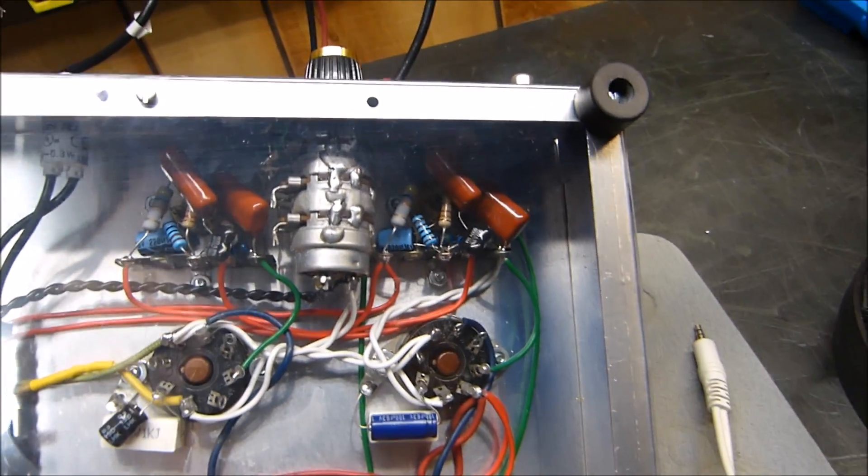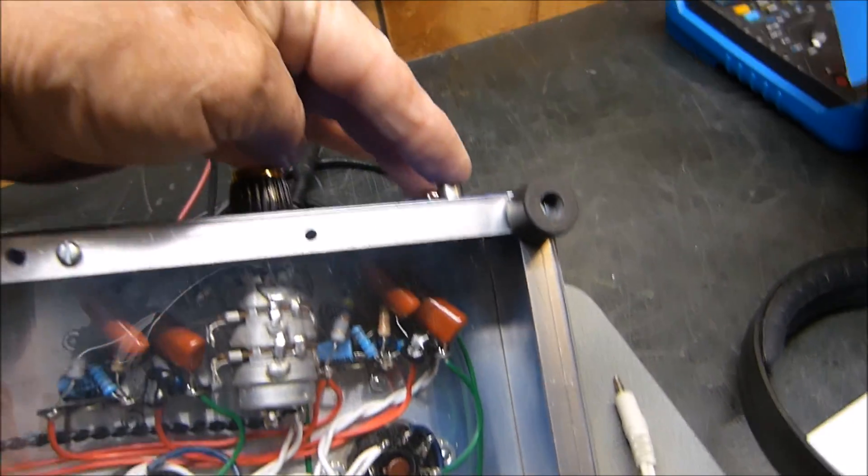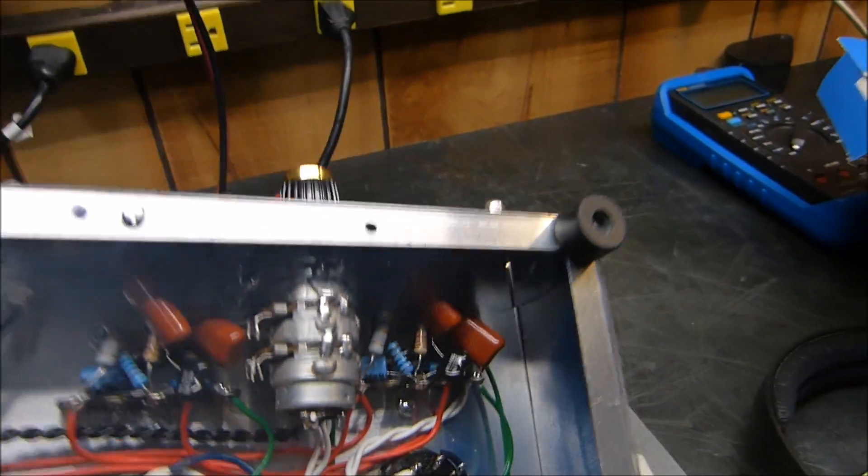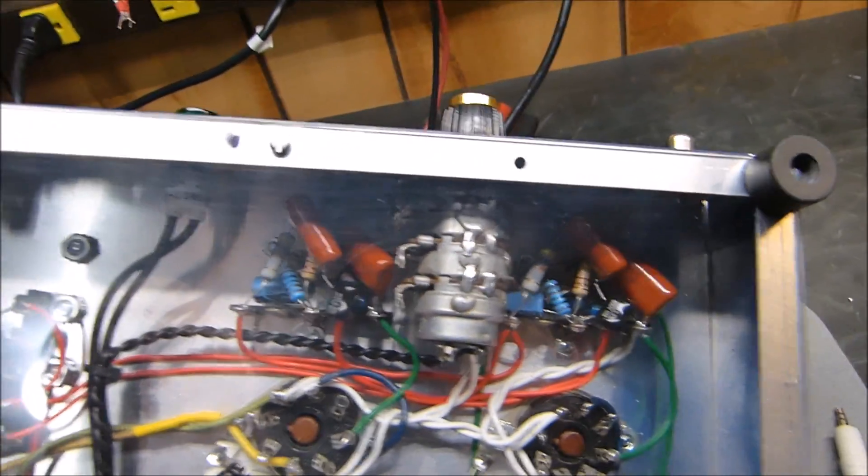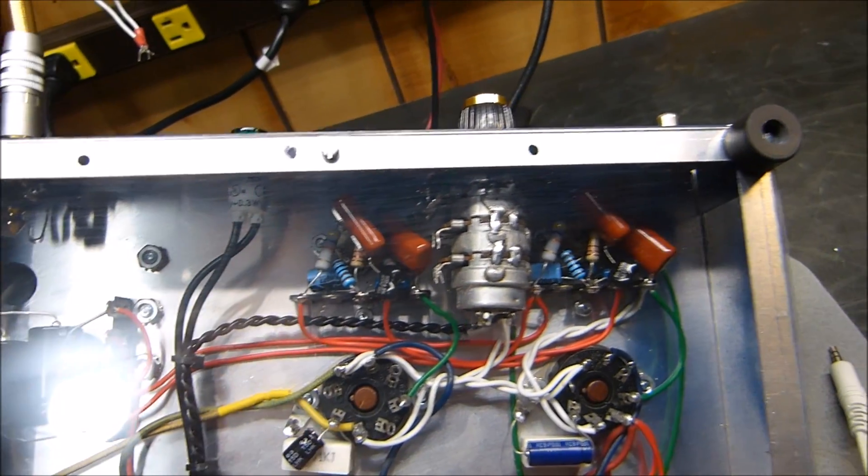As far as grounding other components, yeah, I ground the inputs right here. Inputs are just grounded right on the metal. Yeah, I know you get a terrible glare there. And I ground the cathodes and stuff right at the tube socket.